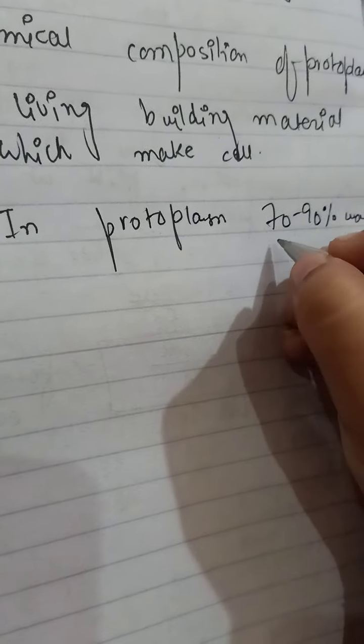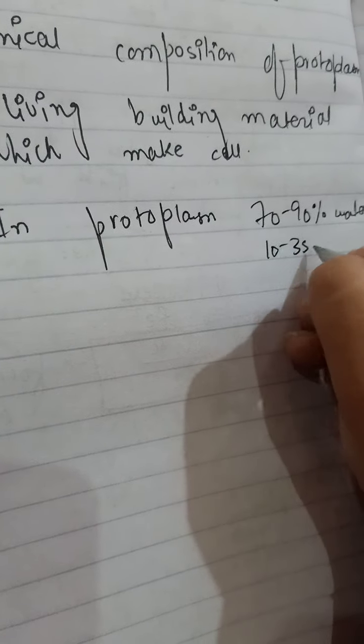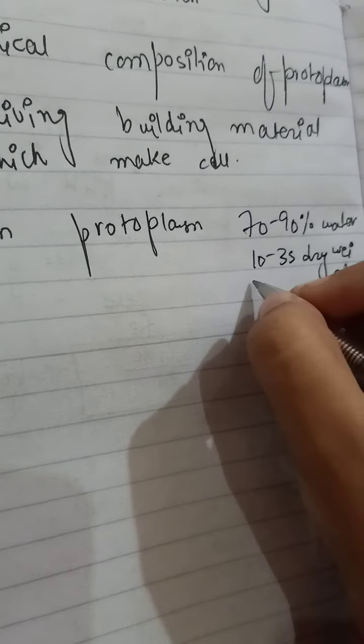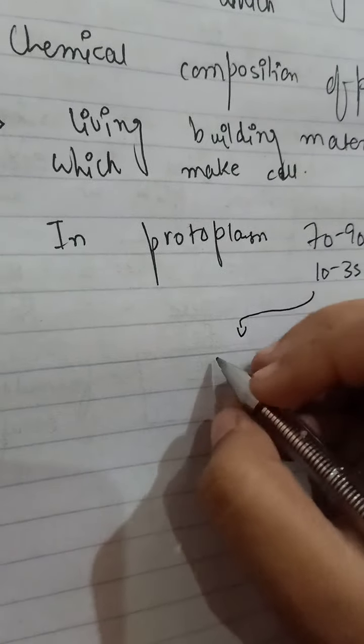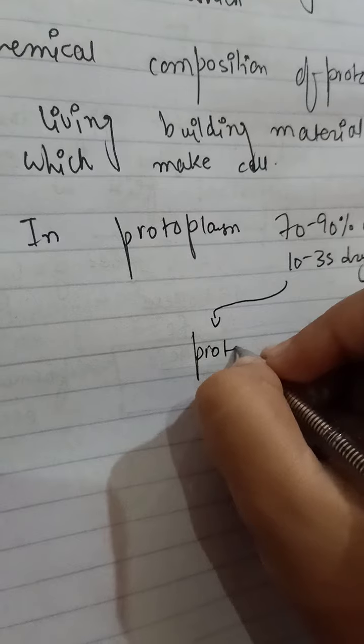And there is 10 to 35 percent dry weight. In dry weight, the solid things include proteins,